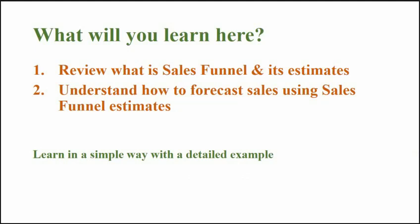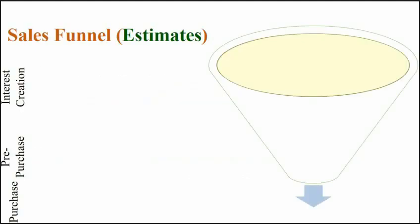This video will also help you understand how companies use the sales funnel to improve their sales effort. The sales funnel includes three stages: interest creation, pre-purchase, and purchase, divided into five steps. Since our focus here is sales forecasting, we will review the sales funnel briefly and move to a forecasting example, focusing on estimates of each step, as these estimates will help us in sales forecasting.